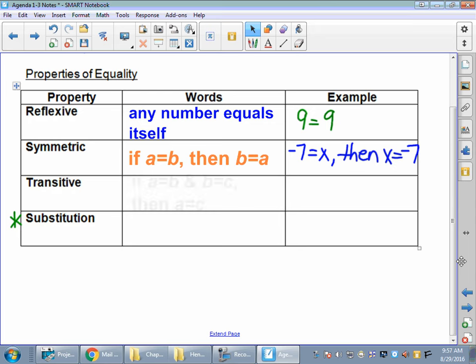Transitive property, I like this one because this is keeping it simple. You've heard of that, keep it simple, stupid. This is it. If A equals B and B equals C, then A has to be equal to C.